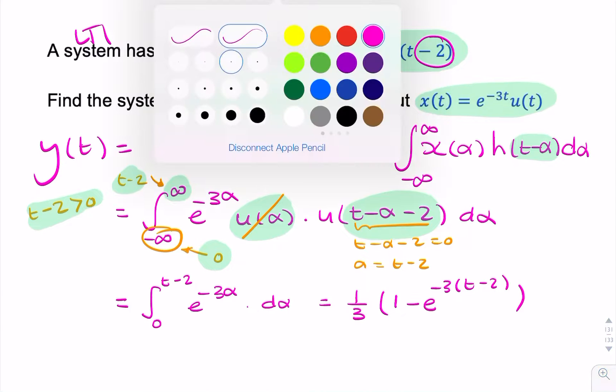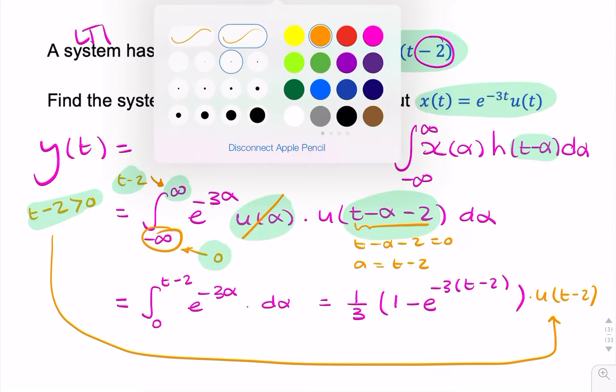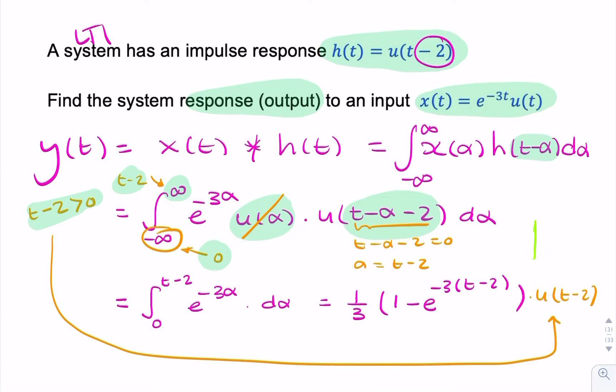Because we said that t minus 2 has to be greater than 0, that we can write mathematically by saying u of t minus 2. Because u of t minus 2 is a unit step that starts at t equals 2. So that means if we said t minus 2 is greater than 0, that means t is greater than 2.